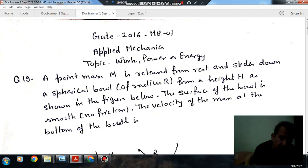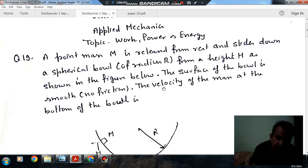Hello, welcome again. We are solving some questions of applied mechanics. The topic is work, power, and energy. Question number 19 from GATE: A point mass M is released from radius R